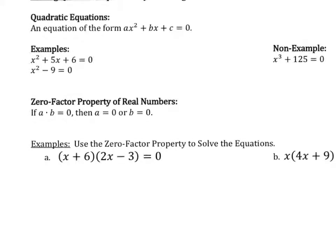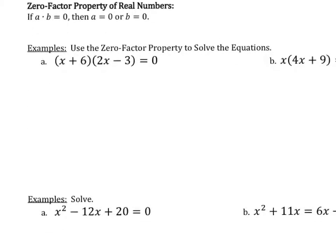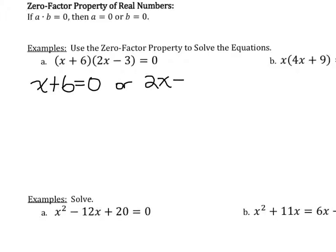Let's first look at an example where we use the zero factor property to solve an equation. In this equation, I have x plus 6 times 2x minus 3 equals zero. Notice that I have two things that multiply together to give me zero. The first thing I'm multiplying is x plus 6, and I'm multiplying that by 2x minus 3. By the zero factor property, I can solve this equation by setting the first thing equal to zero — x plus 6 — or setting the second factor equal to zero — 2x minus 3. Now what we have are two linear equations.